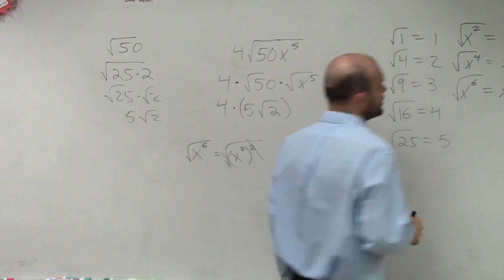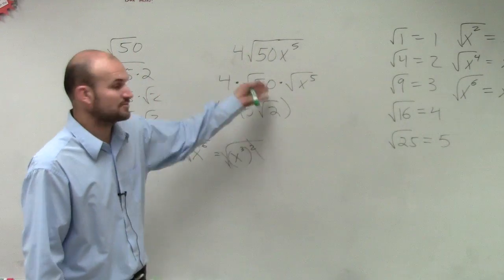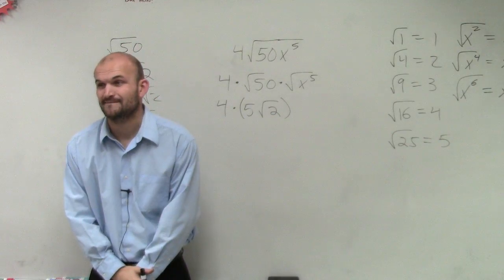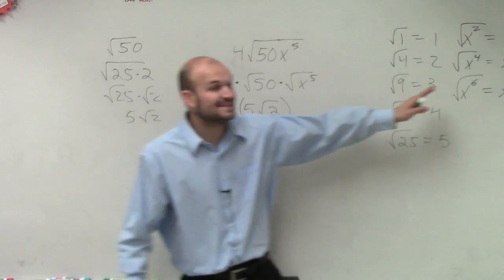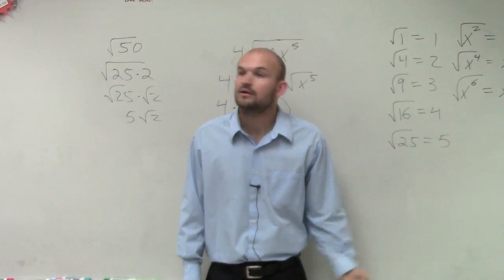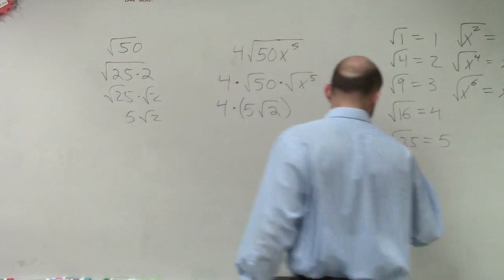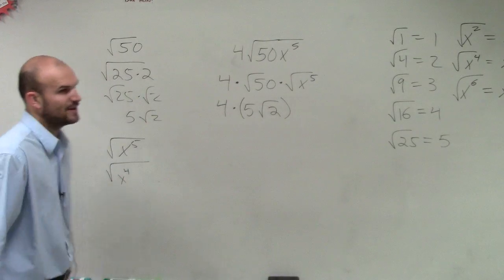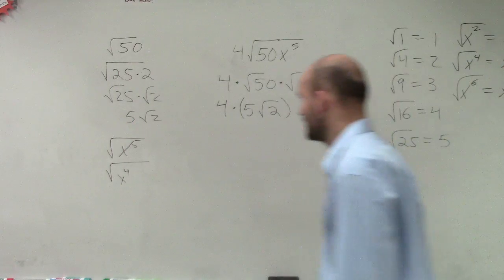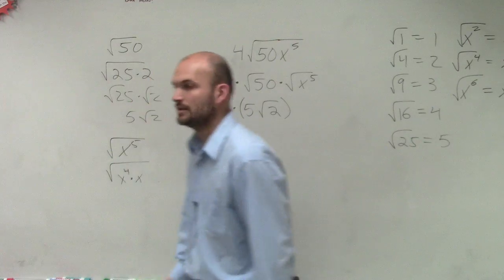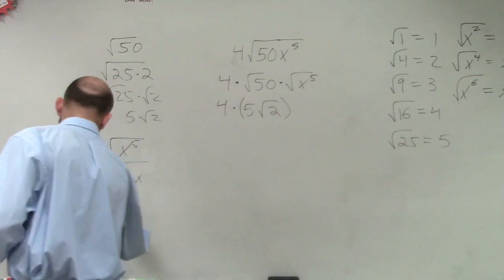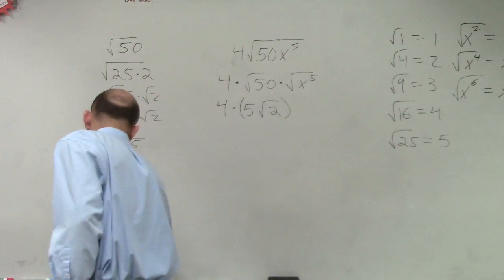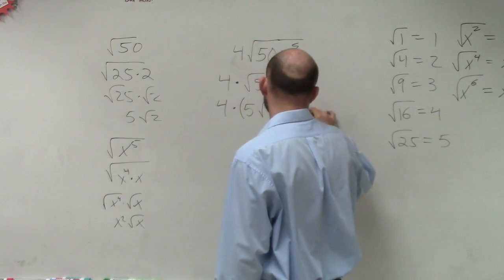But we don't have x cubed — we have x to the fifth. Can we take the square root of x to the fifth? No. Can we write it as a product of one of our square numbers? X to the fourth times what? If I say x to the fifth, my only square number option is x to the fourth. What do I need to multiply x to the fourth by to get x to the fifth? X to the first power. So this becomes the square root of x to the fourth times the square root of x. The square root of x to the fourth is x squared. Therefore, this is x squared times the square root of x.